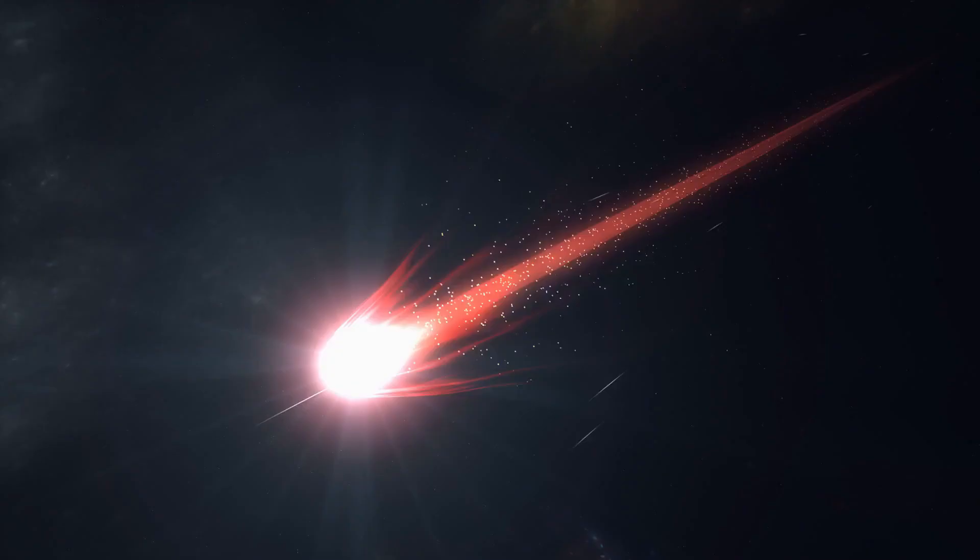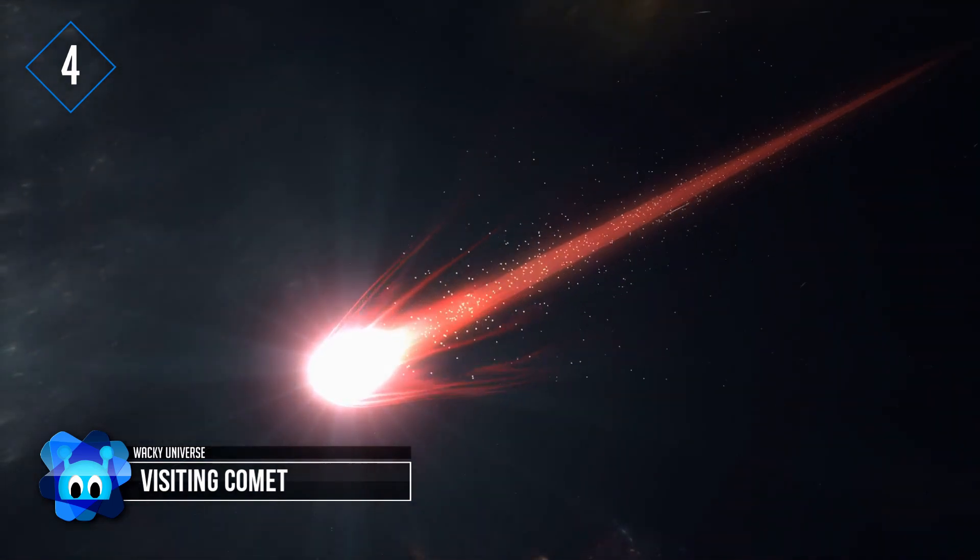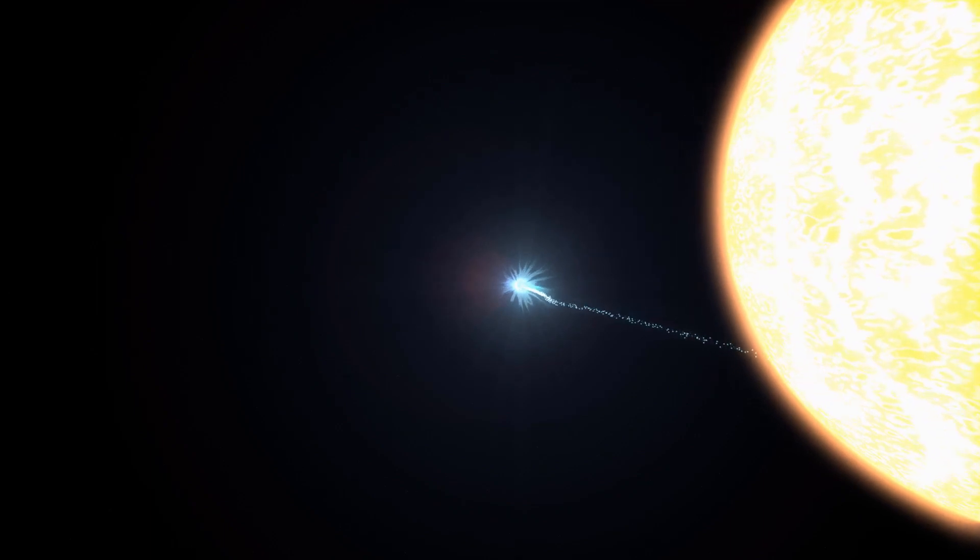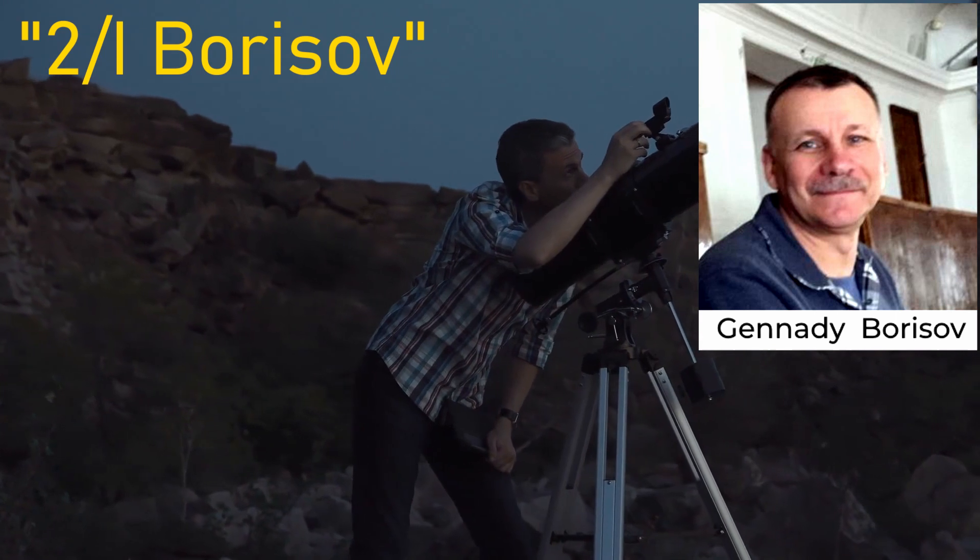Visiting Comet. This visitor to our solar system is the second ever observed from outside. The first was Oumuamua in 2017. It is called 2i Borisov, after Gennady Borisov, an amateur astronomer.